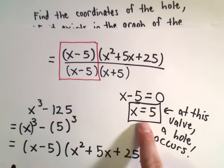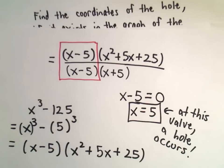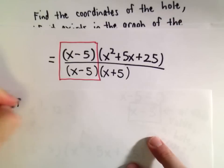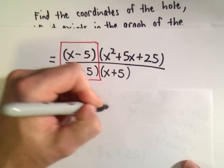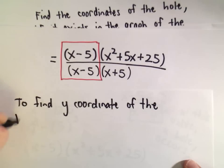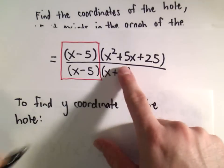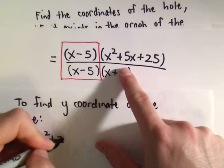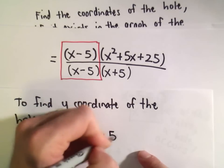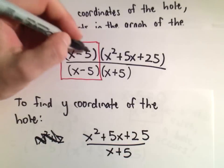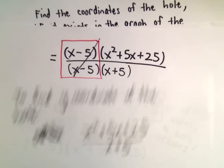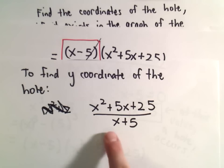So we know at x equals 5 there's going to be a hole, but the idea is, what's the corresponding y value of where this hole exists? Well, to find the y value, to find the y coordinate of the hole in the graph, basically what we do is we look at the rest of the function: x squared plus 5x plus 25 over x plus 5. So if we had canceled out our common factors, we would be left with x squared plus 5x plus 25 over x plus 5.